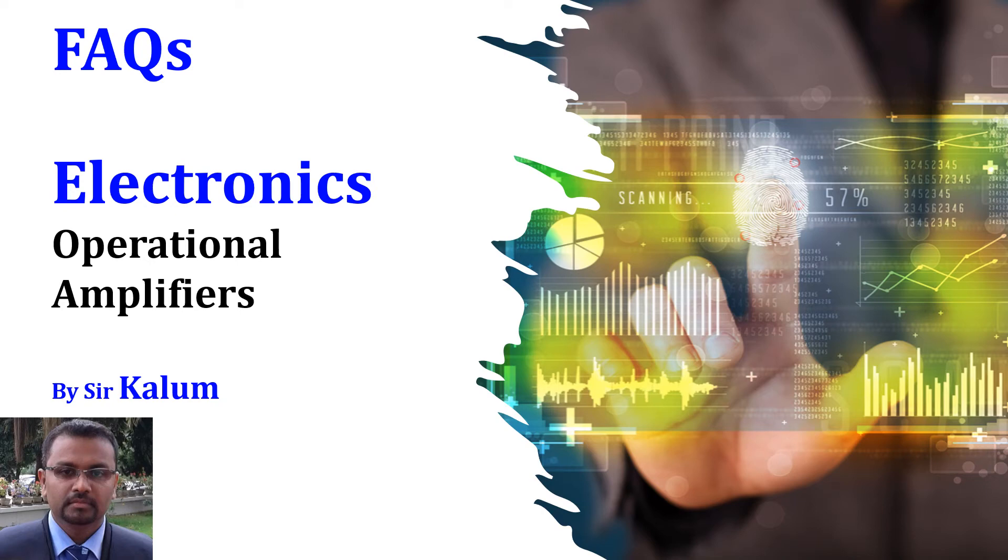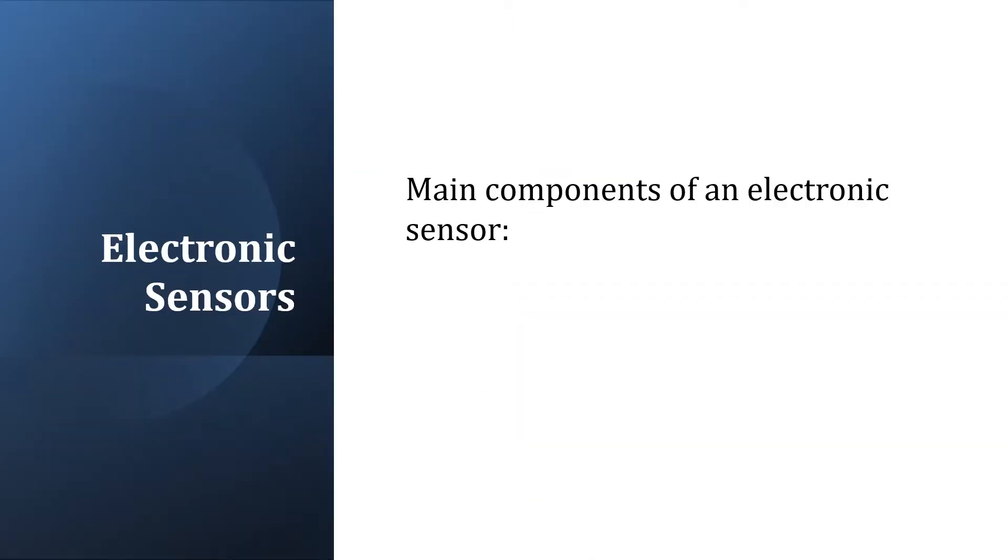Lesson: Electronics. What are the main components of an electronic sensor? A sensing device, a processing unit, and an output device.